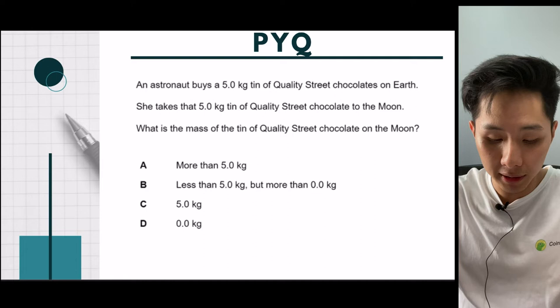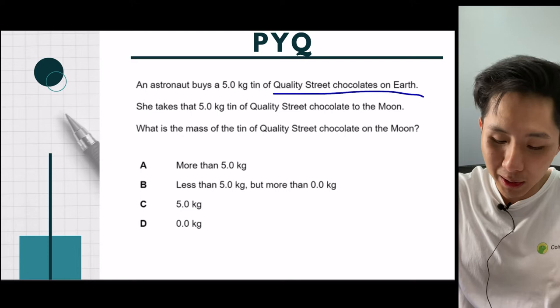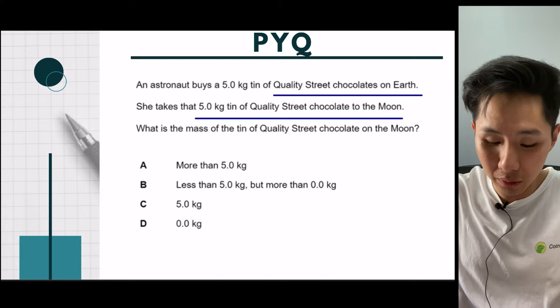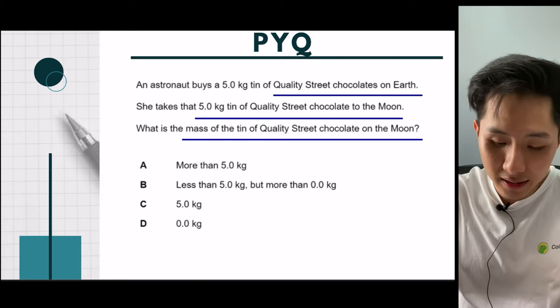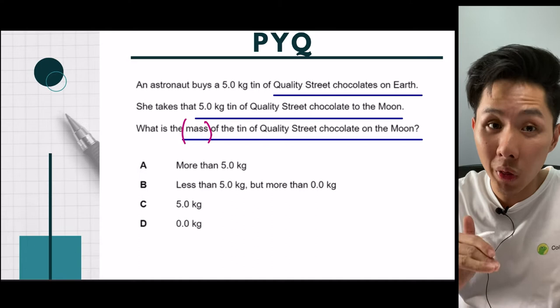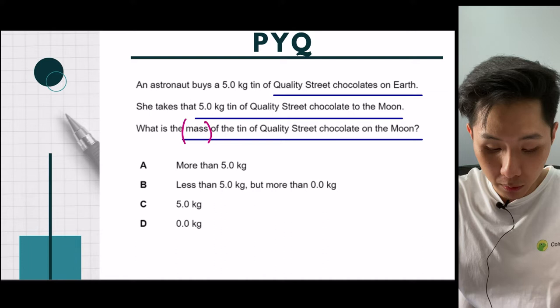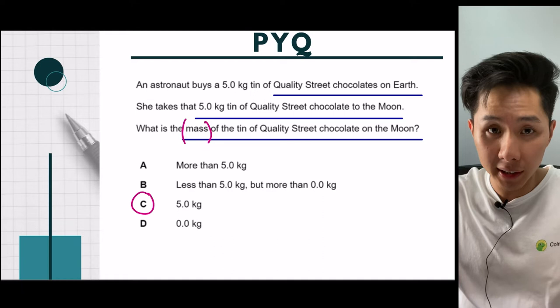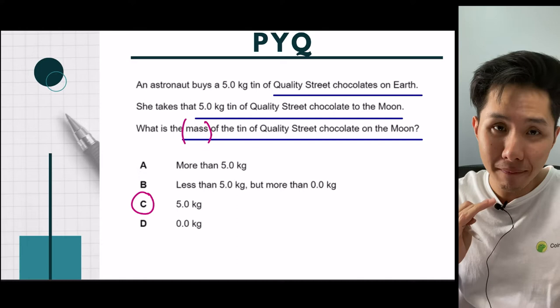Second question: an astronaut buys a 5 kg tin of chocolate on Earth and takes it to the Moon. What is the mass of the tin? Note they're asking for mass, not weight. Mass does not change regardless of location. So the mass on the Moon is still 5 kilograms. If the question asked for weight, the answer would be lower on the Moon due to lower gravitational force.